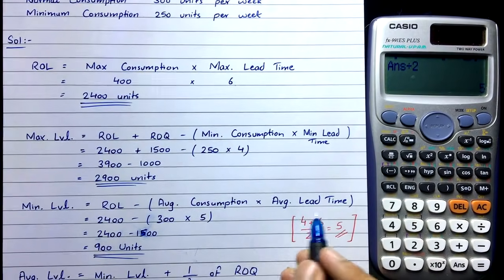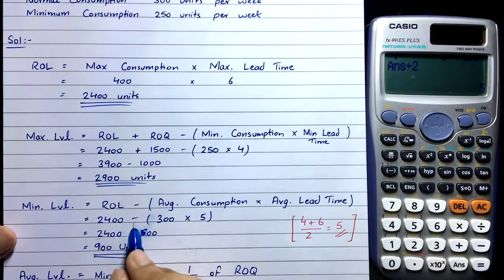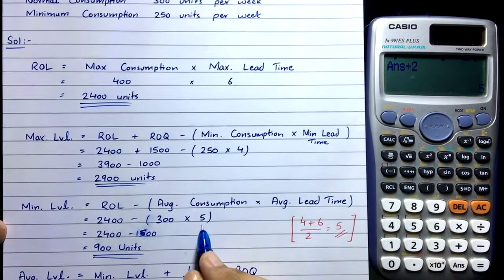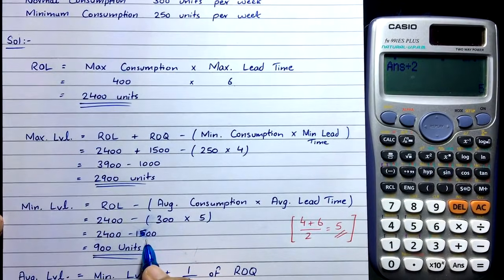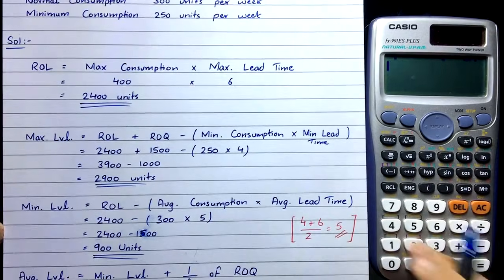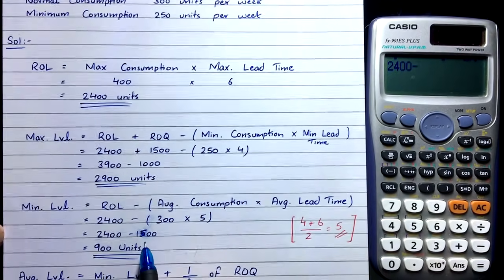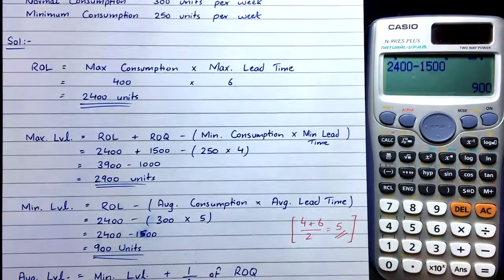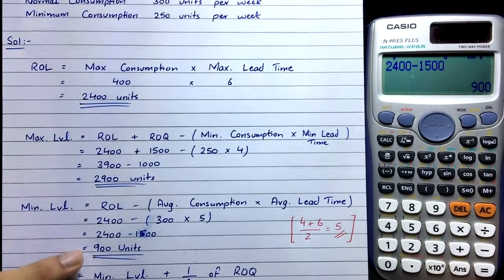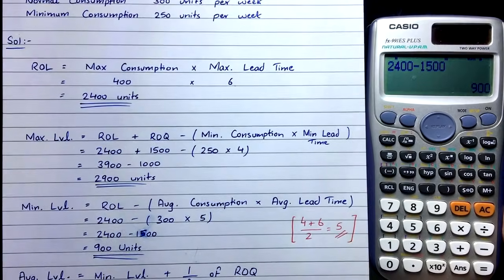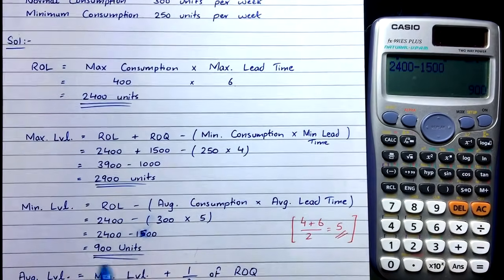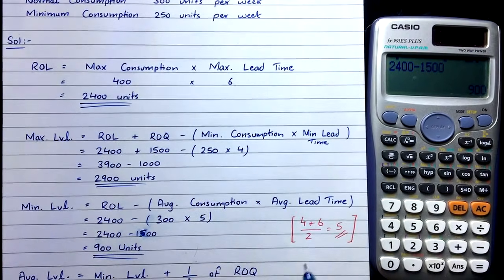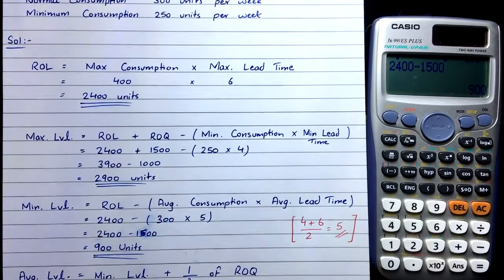So: 2,400 − (300 × 5) = 2,400 − 1,500 = 900 units. The minimum level is 900 units. We must not let inventory fall below this level — if it does, production can be interrupted.